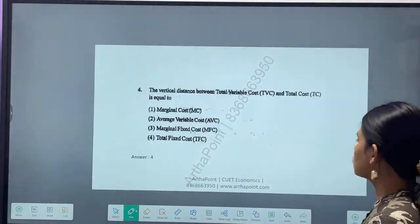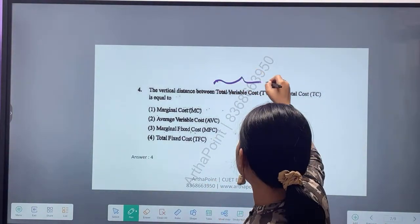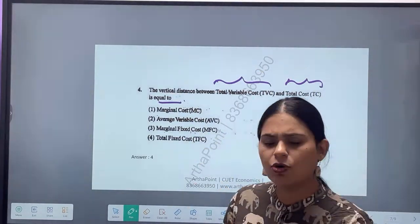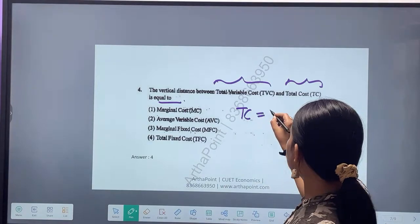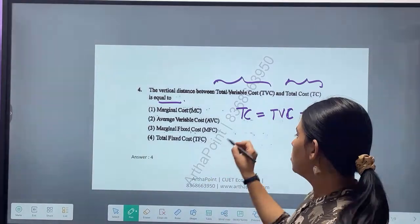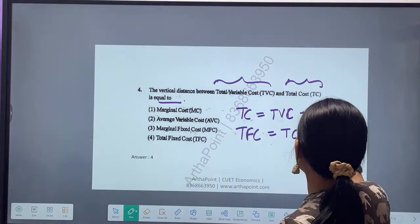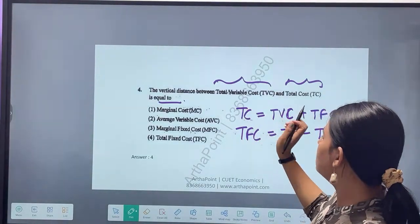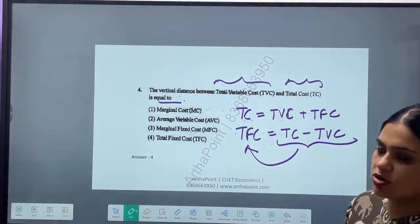Now let's go ahead and take the next question. Read this: The vertical distance between TVC and TC is equal to? Very simple. What is total cost? Total cost is total variable cost plus total fixed cost. So what will be total fixed cost? Total cost minus total variable cost. So the distance between the two is nothing but total fixed cost.